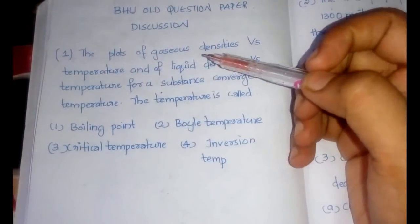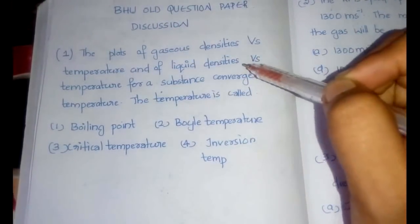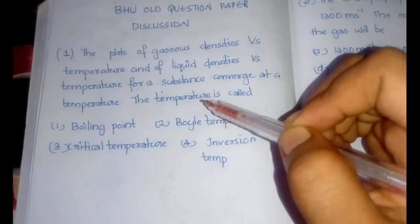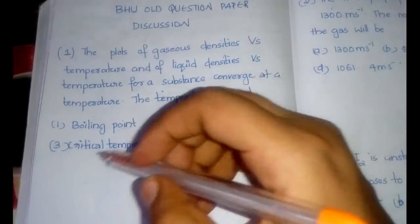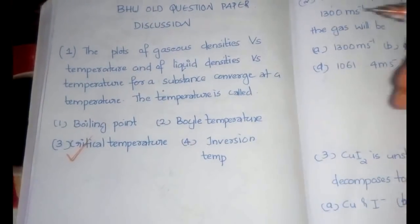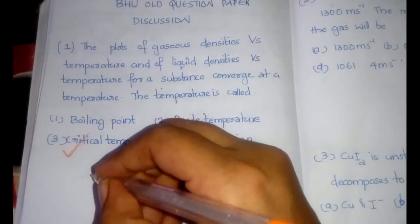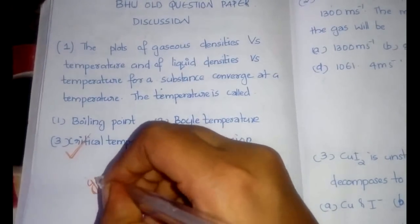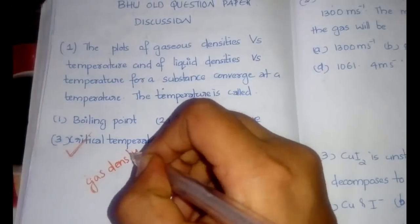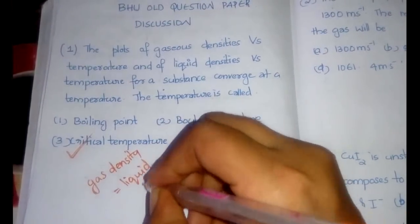The question: the plots of gaseous densities versus temperature and of liquid densities versus temperature for a substance converge at a temperature. That temperature is called — the answer is option 3: critical temperature. This means that at a certain temperature, gas density is equal to liquid density.